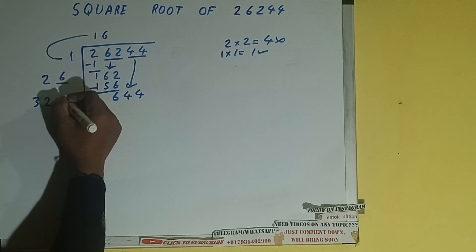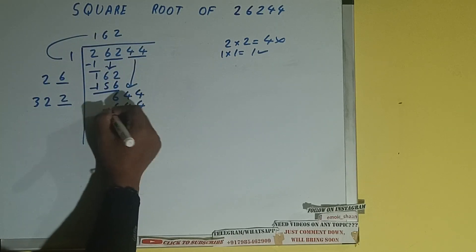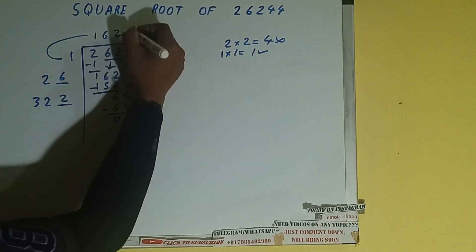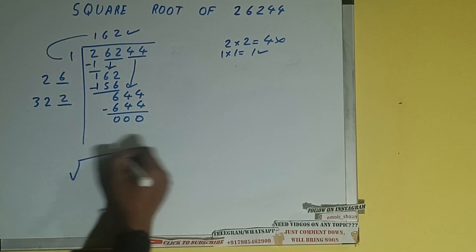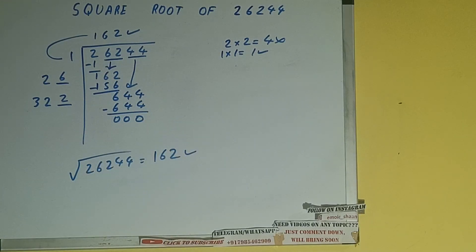644 subtract, 0 will be left. Once we are left with 0, whatever is in the equation will be the answer. That is 162. So square root of 26244 will be 162. That's all.